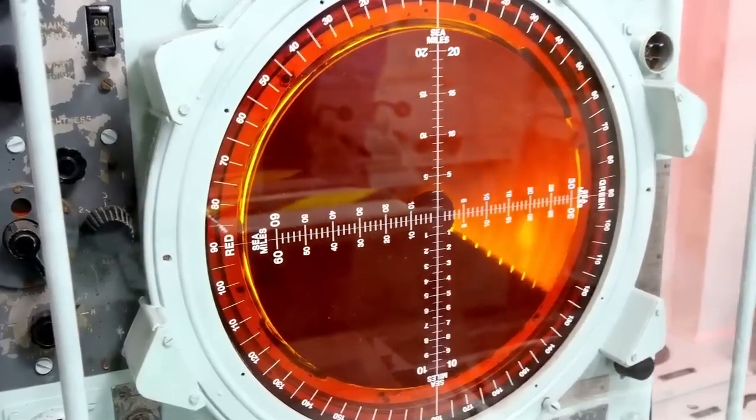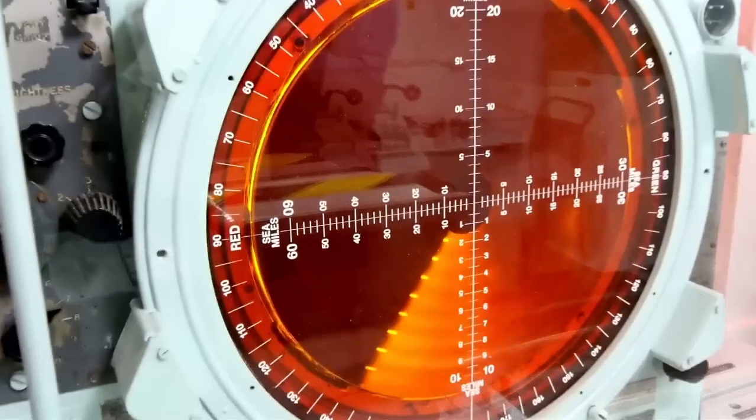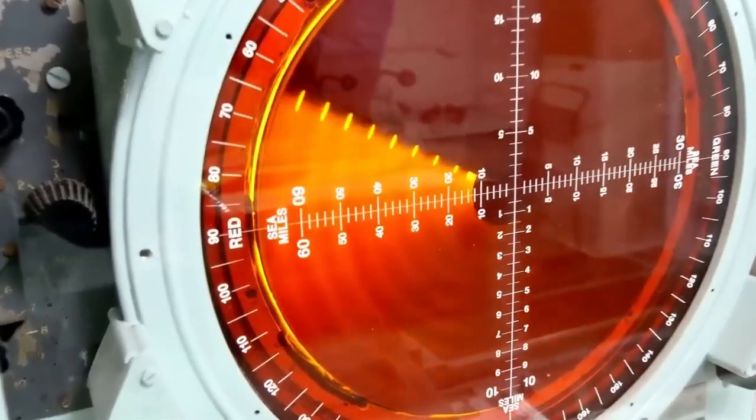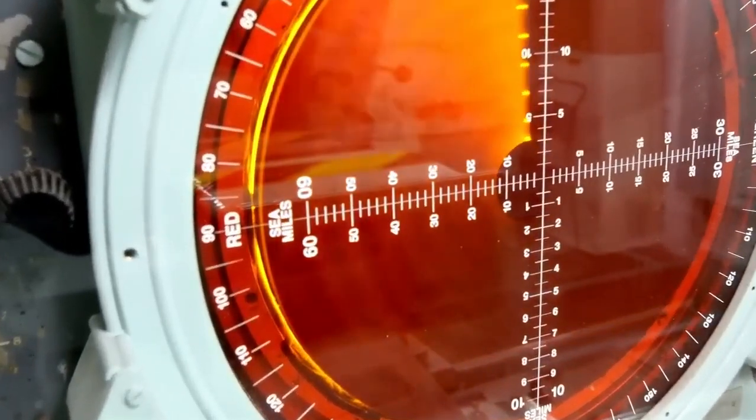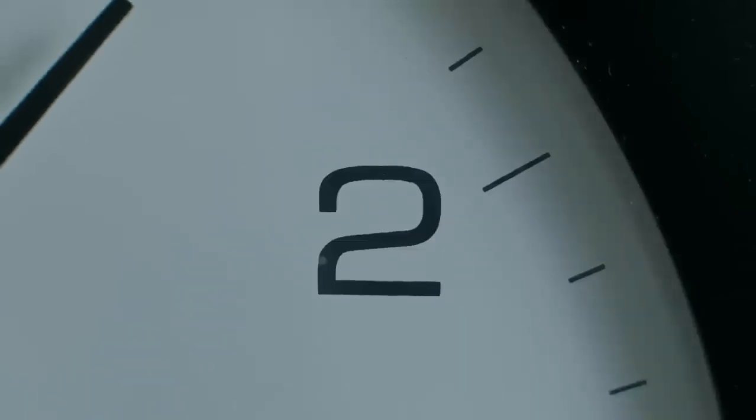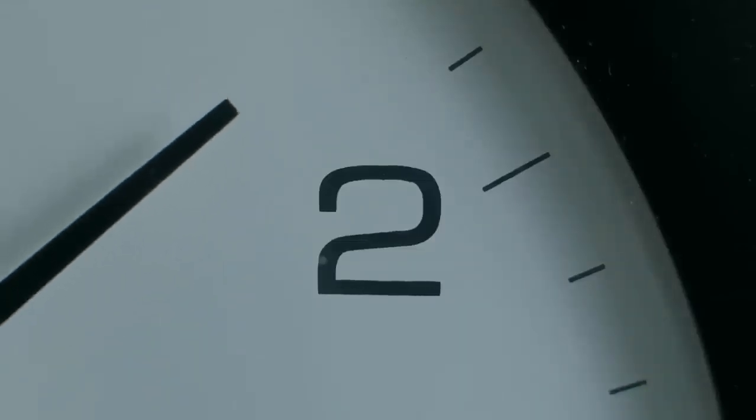Such occurrences, though uncommon, are not wholly unprecedented. Scientists have conjectured that some earlier mass extinctions on Earth might have been partly caused by supernova radiation coming to the planet.